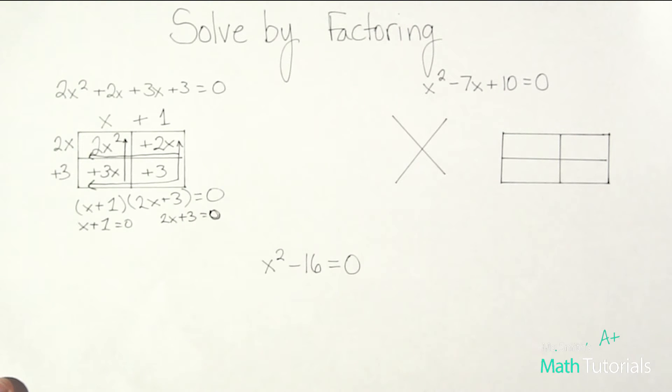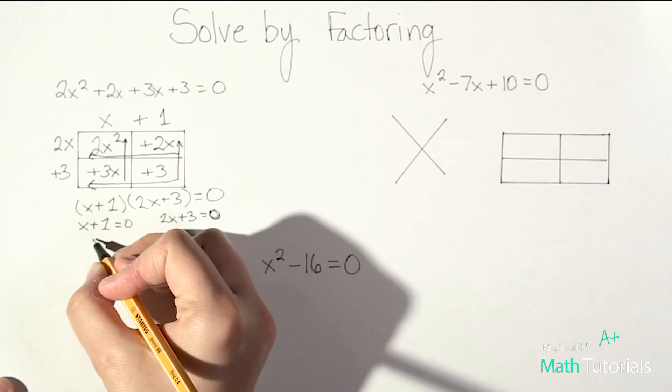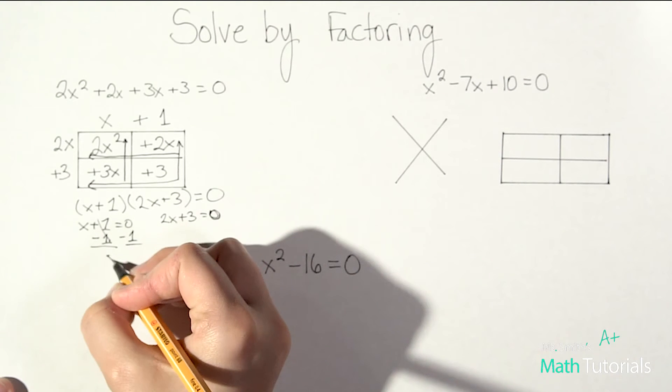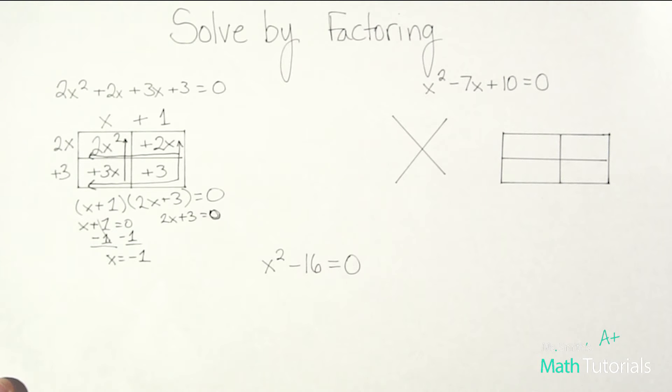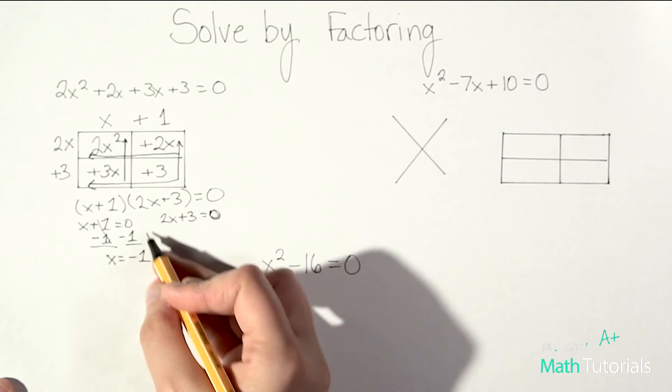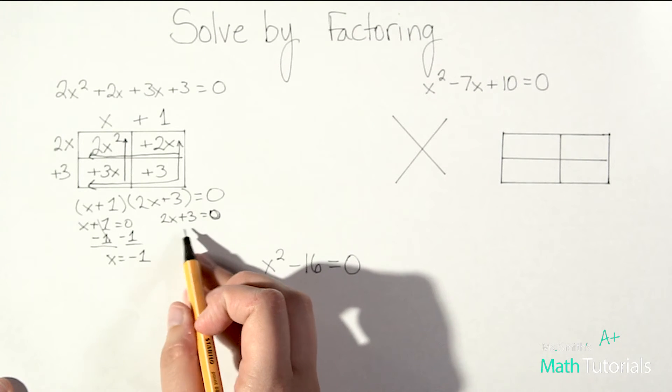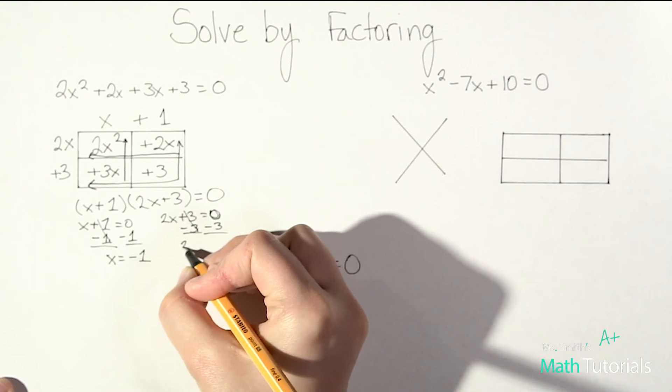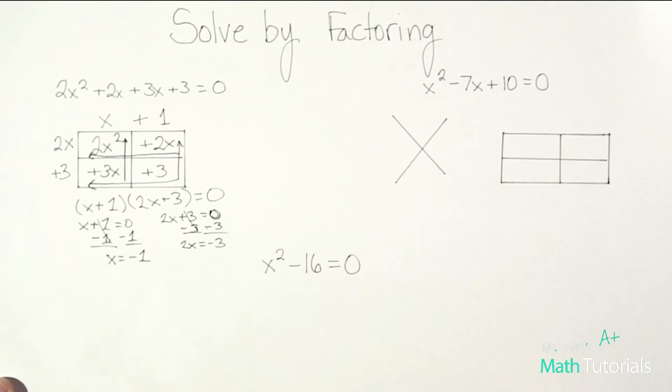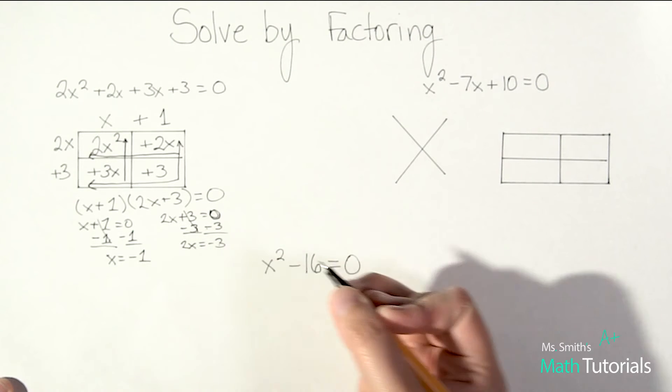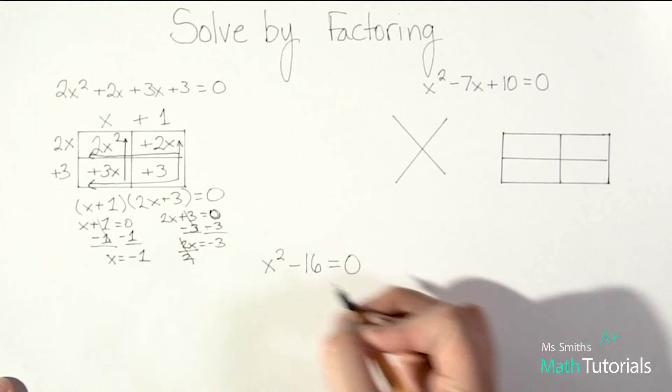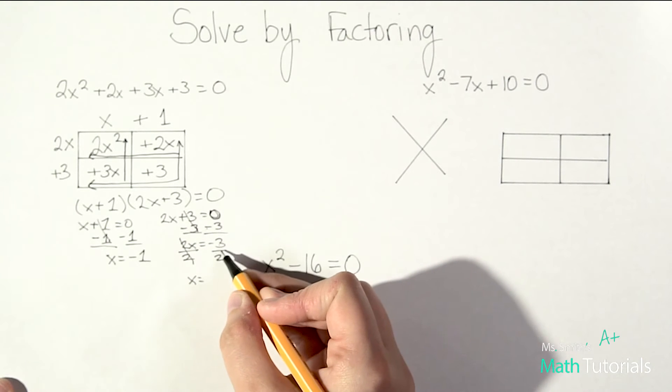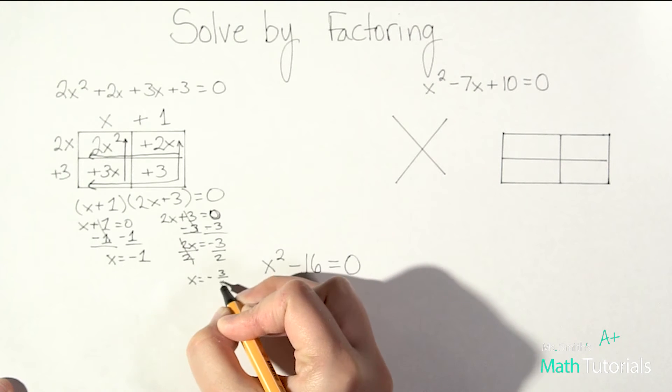From here we're going to use algebra to solve. So if I wanted to get x alone for this equation I would need to subtract one from both sides. Zero minus one is negative one. So that's one of my answers, x equals negative one. Let's do the same thing here and solve this one. Well this one's a little more complicated but I just want to get my x alone. So I'm going to start by subtracting the three. So I have 2x equals negative three. Zero minus three is negative three. This is two times x, so if I'm going to undo times, we've got to divide. So we'll divide both sides by two and then I end up with x equals negative three over two. I can't reduce negative three divided by two so that's okay. It just stays negative three over two.